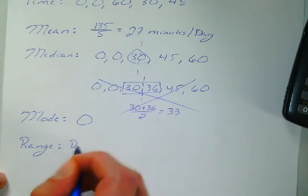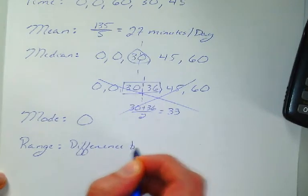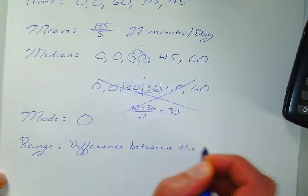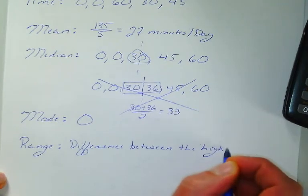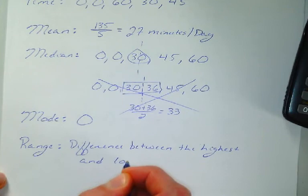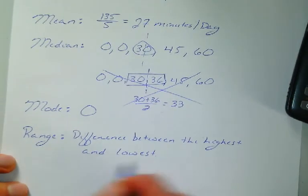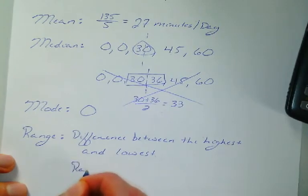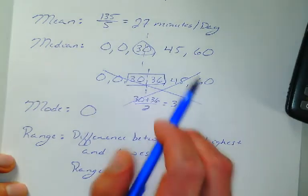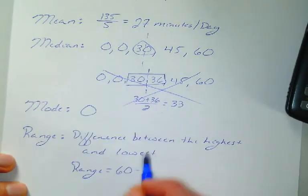Range is the difference between the highest and lowest. So, to find the range, all you're going to do is subtract. So, in this case, my range is going to be my high point, which is 60 minus my low point, which is 0.